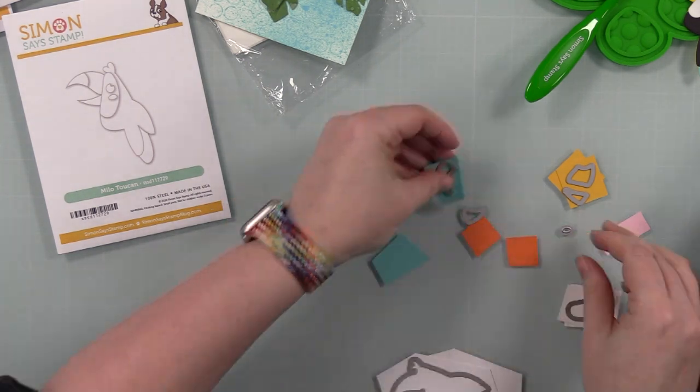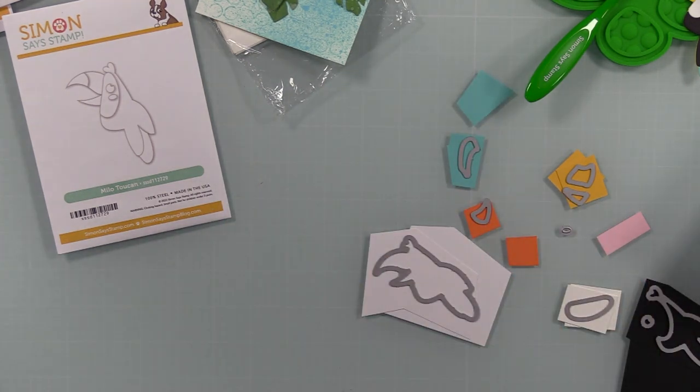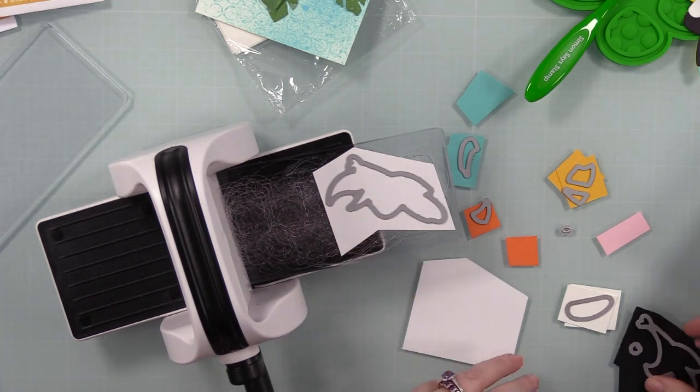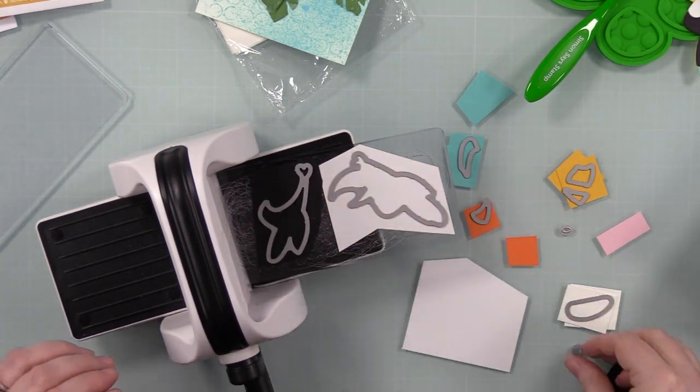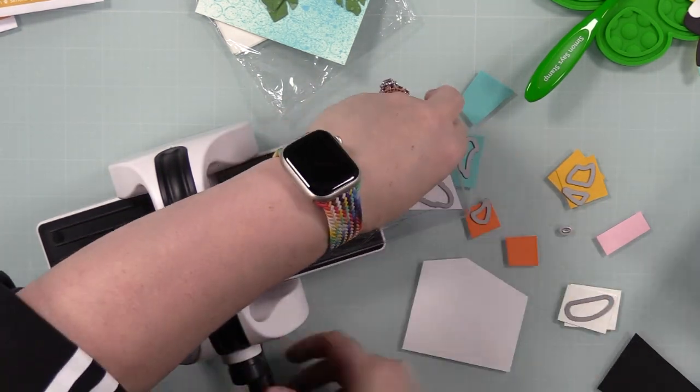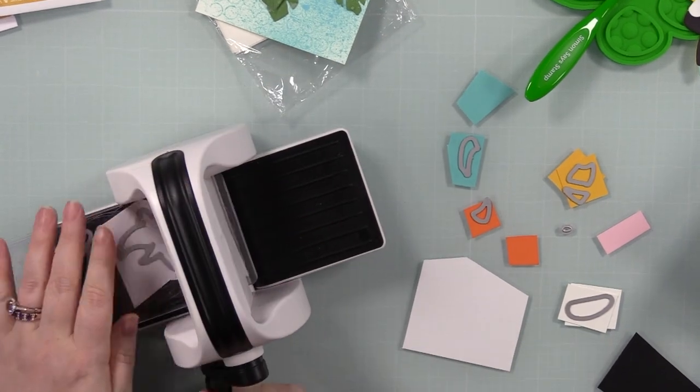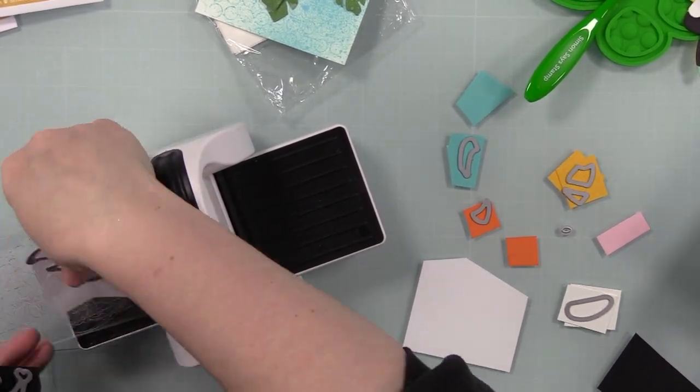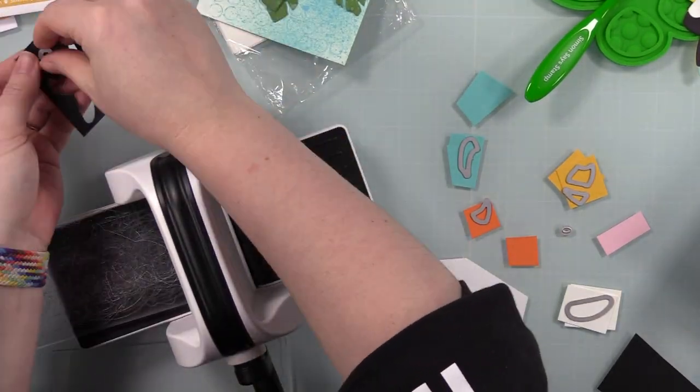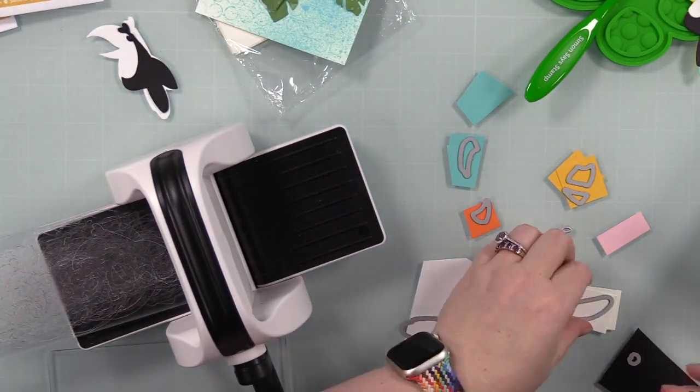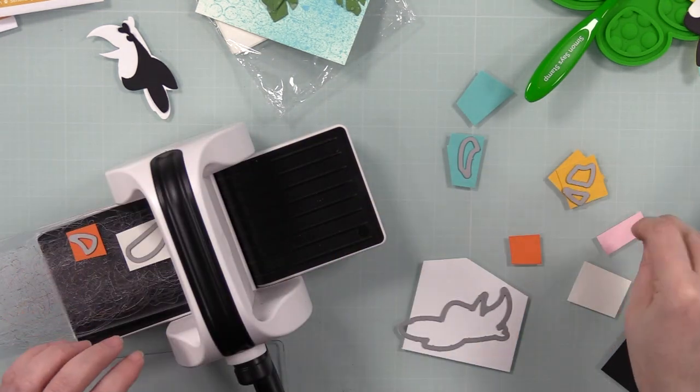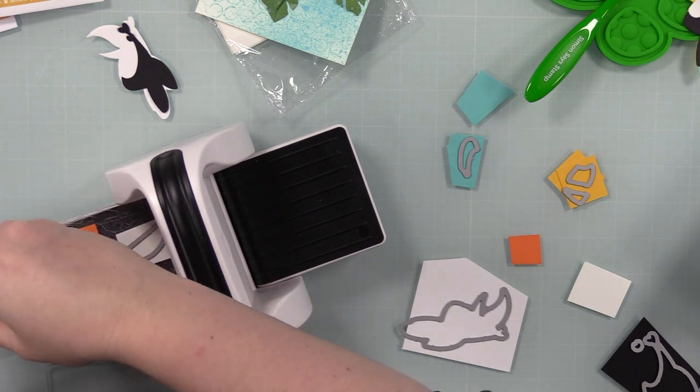I did all those things, then die cut those green panels with the Tropical Leaf Bunch wafer die. I can't even tell you, I had it pulled out to use with this Milo Toucan wafer die. I remembered that I had that tropical leaf bunch, then I pulled it out to make these cards and set it somewhere. I can't tell you how long and how many things I had to go through till I finally found it right under my nose.